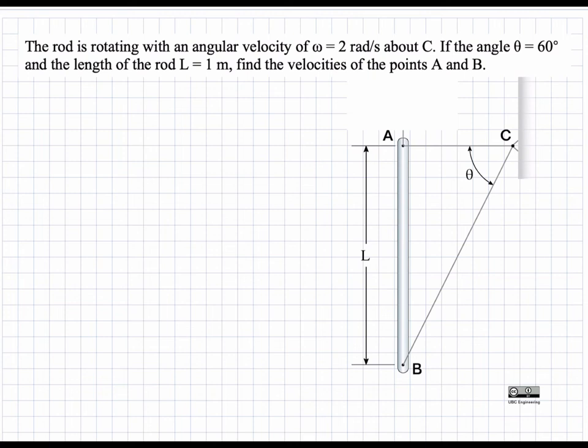In this problem, we have a rod AB that is rotating about C with an angular velocity of two radians per second. Given the angle theta is 60 degrees and L is one meter, we're asked to find the velocities of point A and point B.